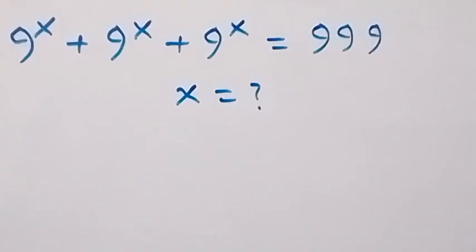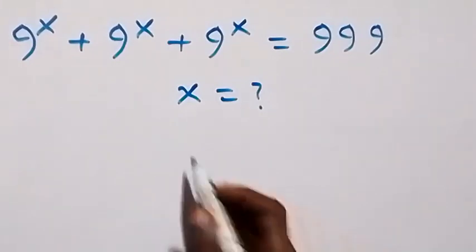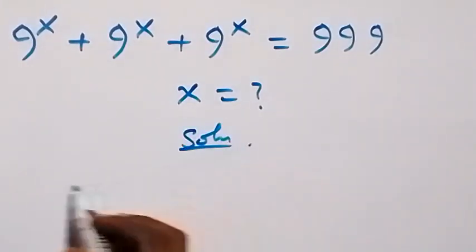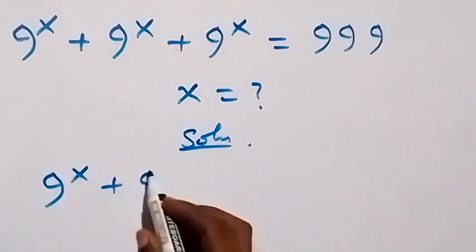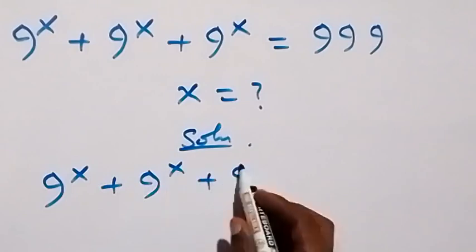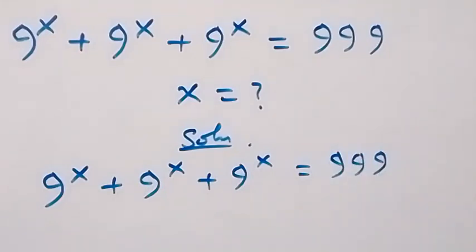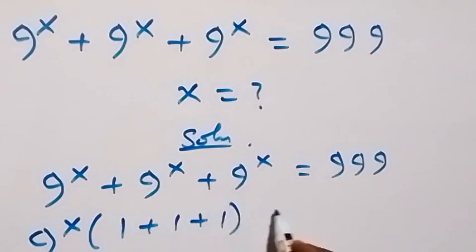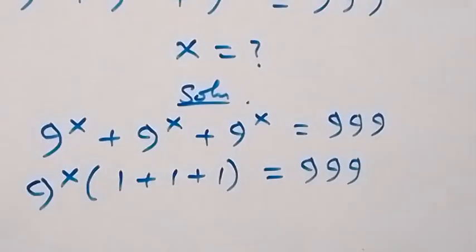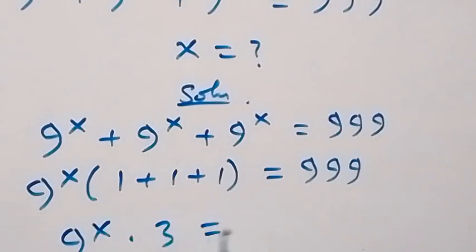Hello, you are welcome to solve for x in this equation. What is given is 9 raised to power x, plus 9 raised to power x, plus 9 raised to power x, equals 9.99. We can factor 9 raised to power x out, giving us 9^x times (1 plus 1 plus 1) equals 9.99. So we have 9^x times 3 equals 9.99.